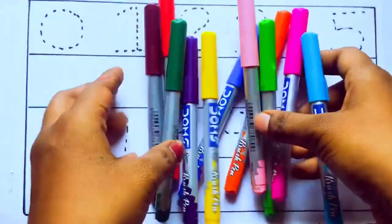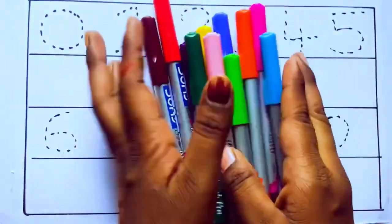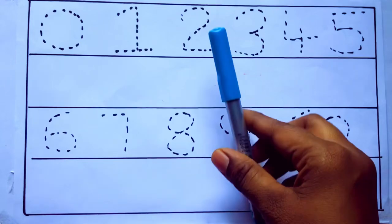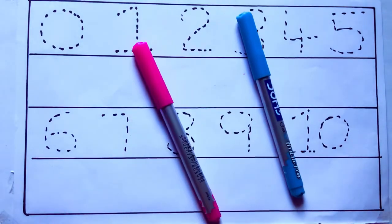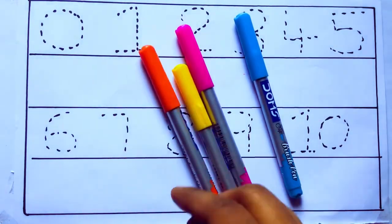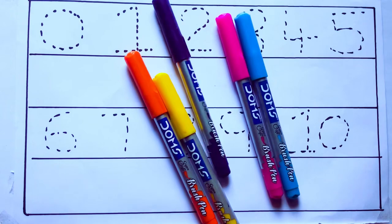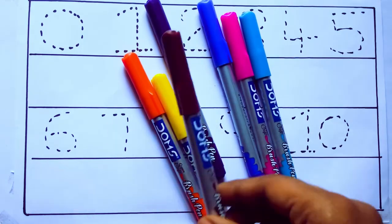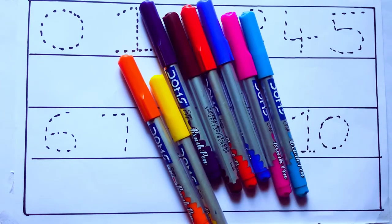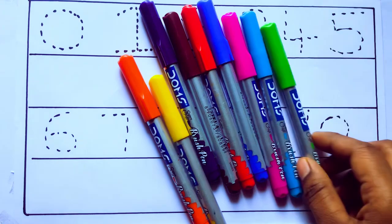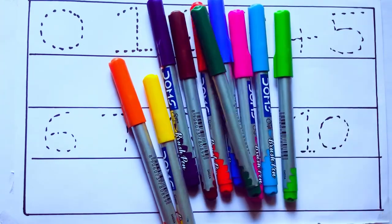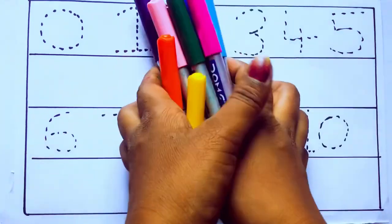Let's learn some colors. These are all the color pencils. Let's learn the names. Sky blue color, pink color, yellow color, orange color, violet color, blue color, brown color, red color, green color, and pink color.